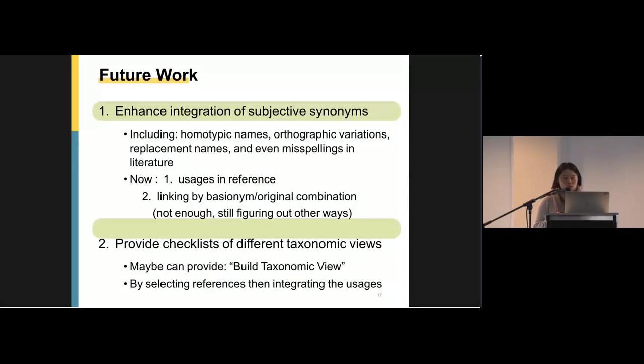So moving to our future work. We think we should enhance integration of objective synonyms, including homotypic names, orthographic variations, replacement names, and even misspelling in literature. Now we can group them by the usage in the reference. It's the original meaning in the reference. If we cannot get enough name usage, then we can link them by basal name or original combination. But I'm still not sure how to link the misspelling or those orthographic variations that have been no original combination or we have not enough usage to group them. I'm still thinking. So if you have some idea, you can share with me.